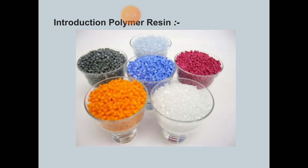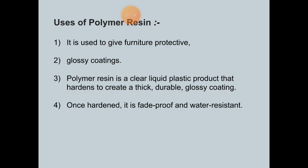Some polymer types of resins are seen in the figure. Polymer resins are typically viscous substances that convert into rigid polymers through a curing process. Resins are naturally occurring but are also often made synthetically. Some synthetic resins have similar properties to natural plant resins, but many are very different.